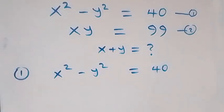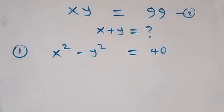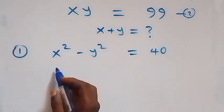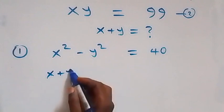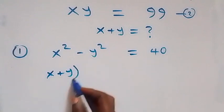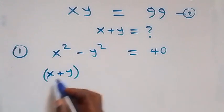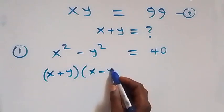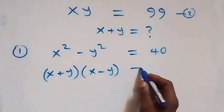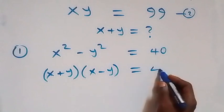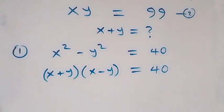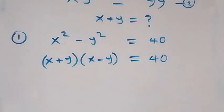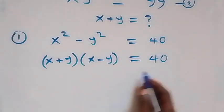On the left hand side, what we have can be written as x plus y times x minus y, equals 40. From here, the next step is to take the square on both sides.